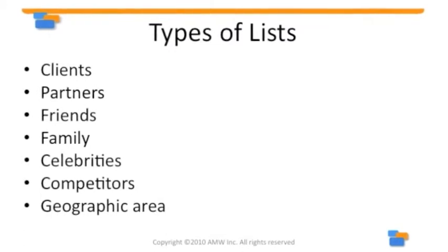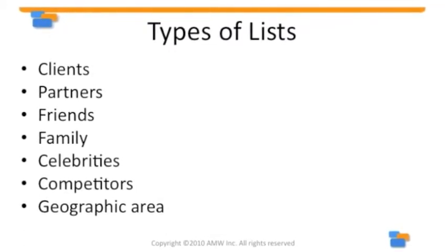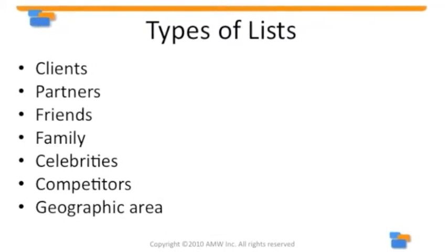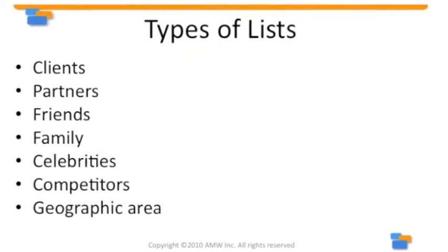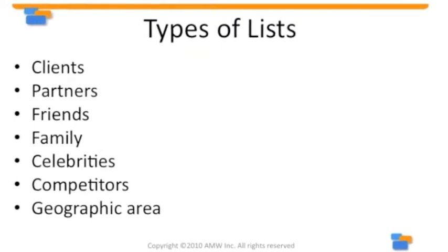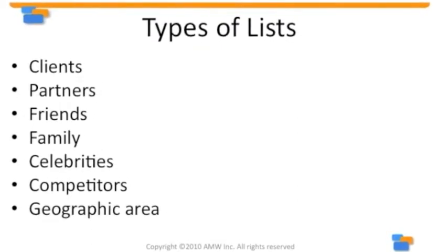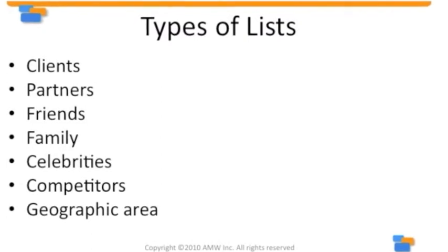Now, what kind of list might you want to watch? A list of clients, a list of partners, friends, family, celebrities, competitors, or those in a geographic area.